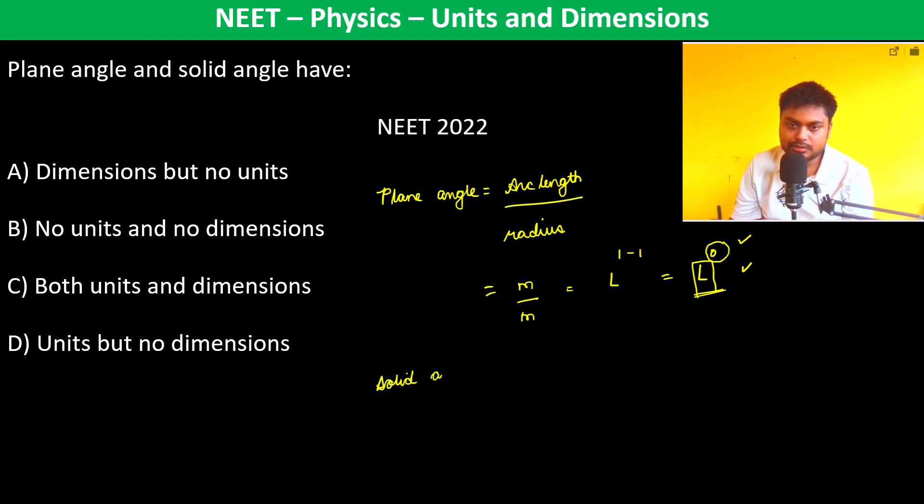Which is surface area divided by r square. Surface area of the cone, the part of the cone which is part of the sphere, and it is subtending an angle of sigma at the center. So this is again meter square by meter square, which is L to the power 2 minus 2, L to the power 0.